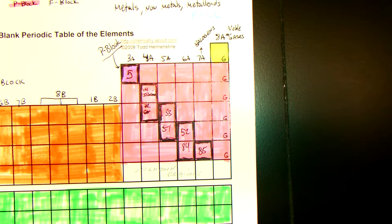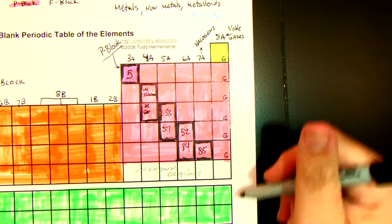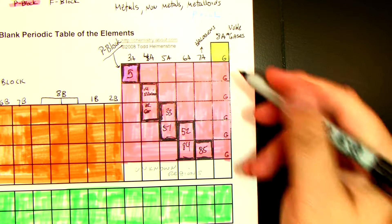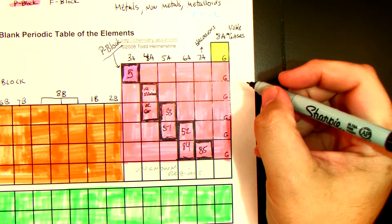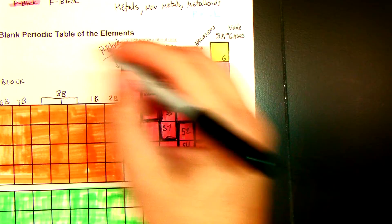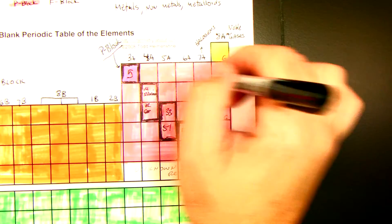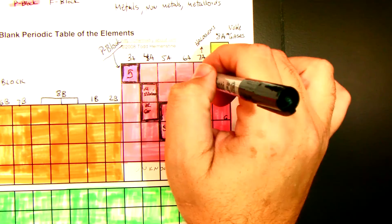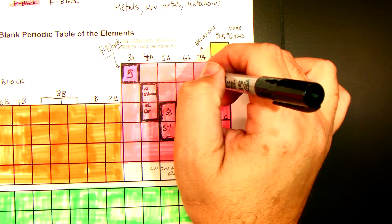Those are gases. And in this first row of the P-block, every element except for the first two are gases.